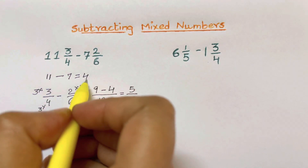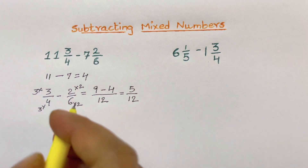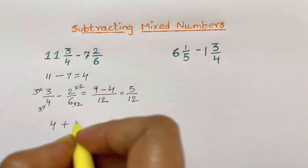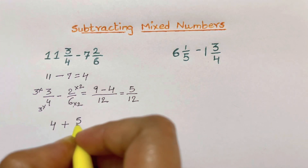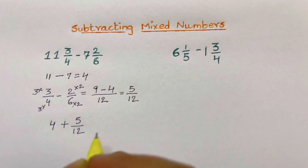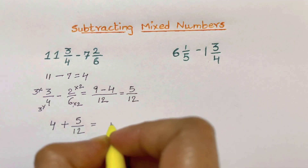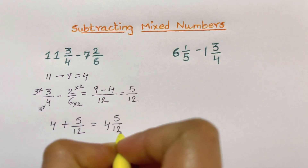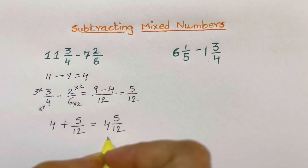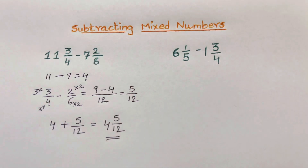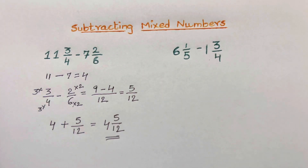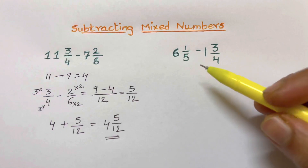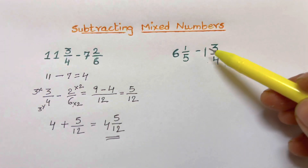Now we add the whole number and the fraction together: 4 plus 5 over 12 gives you 4 and 5 over 12, and that's your answer. Now let's see another example: 6 and 1 over 5 minus 1 and 3 over 4.